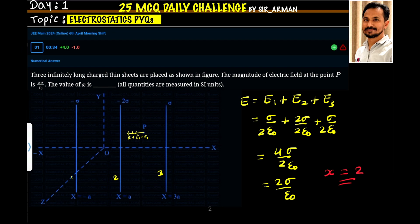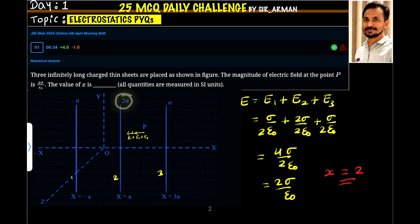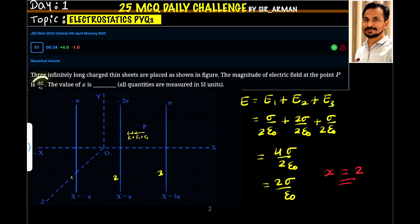We can add these fields directly, so the net electric field is E1 plus E2 plus E3. The electric field due to the first plate with charge density sigma is sigma by 2 epsilon naught. We do not consider the negative sign here because the directions have already been accounted for. The electric field due to the second plate is 2 sigma by 2 epsilon naught, since its surface charge density is 2 sigma. The electric field due to the third plate is sigma by 2 epsilon naught. Adding all three gives 4 sigma by 2 epsilon naught, which simplifies to 2 sigma by epsilon naught. Comparing with x sigma by epsilon naught, the value of x is 2.